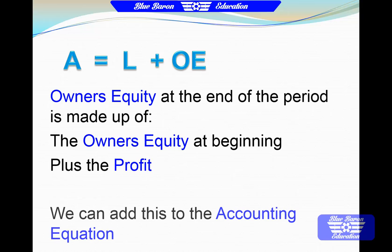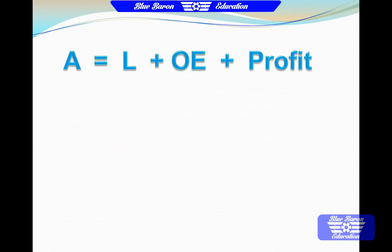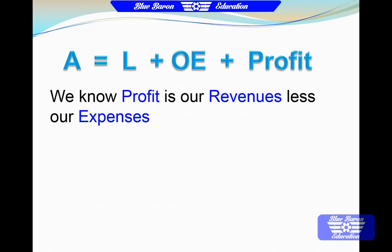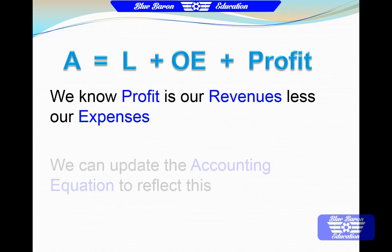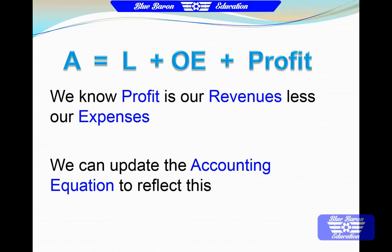So let's add our profit to the accounting equation. We know our profit is our revenue less our expenses, so let's change that profit to reflect that. Assets equal our liabilities plus our owner's equity plus our revenue less our expenses.